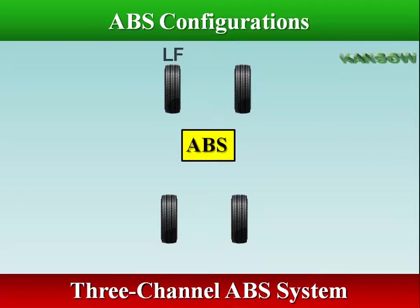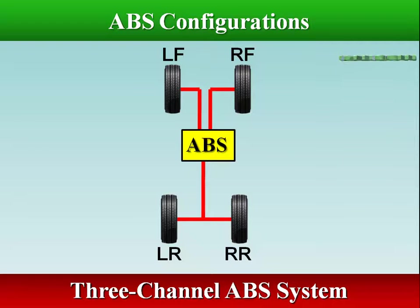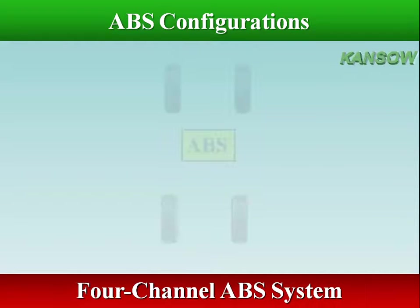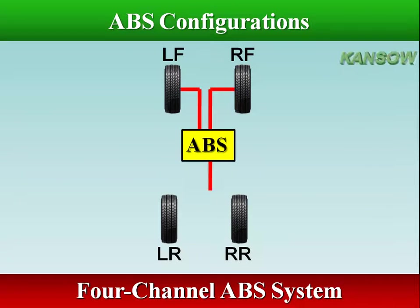The 3-channel 4-wheel system, found on many light trucks, uses 3 wheel speed sensors — one for each of the front wheels and a single sensor for the rears. The rear brakes also share a hydraulic control circuit for both sides. The most efficient ABS brake system is the 4-channel 4-wheel system, which has a speed sensor and hydraulic circuit dedicated to each wheel.